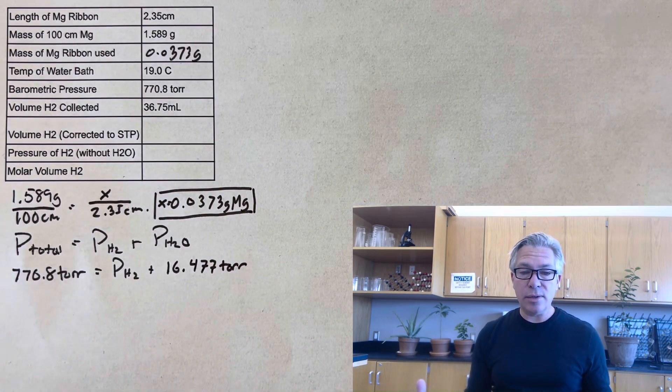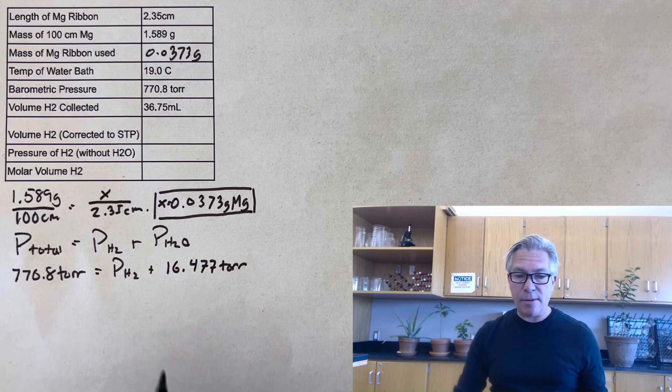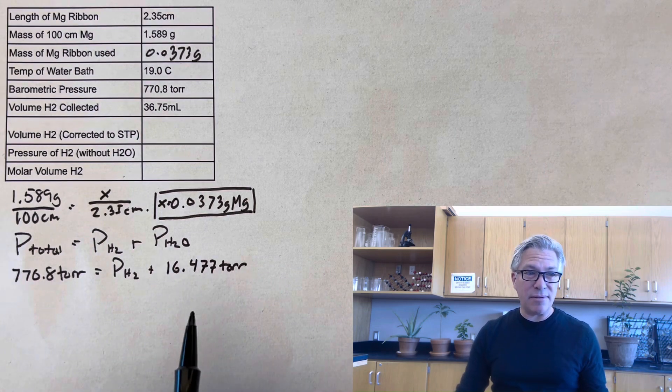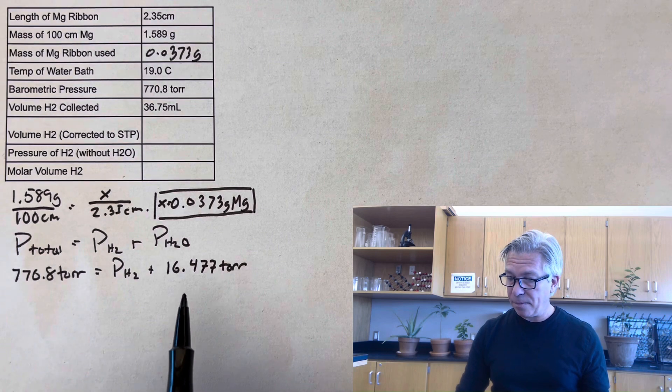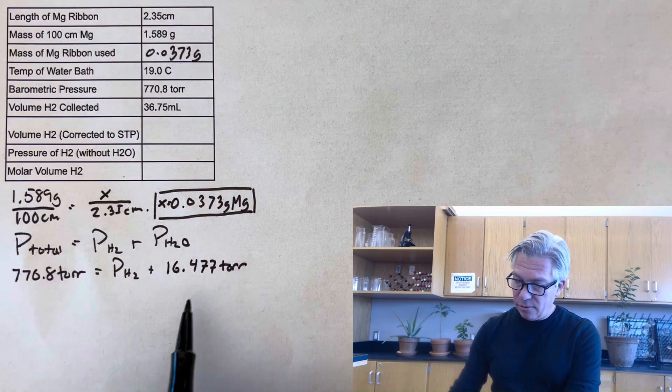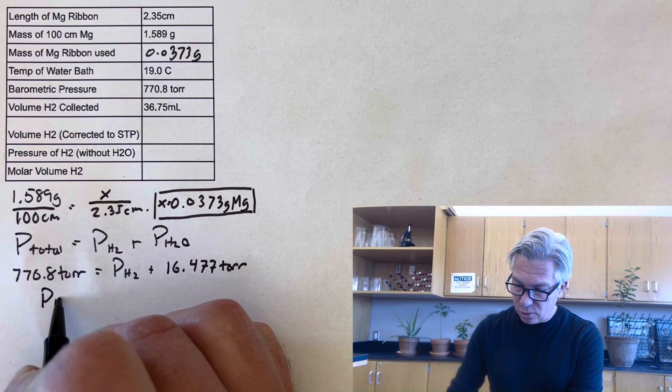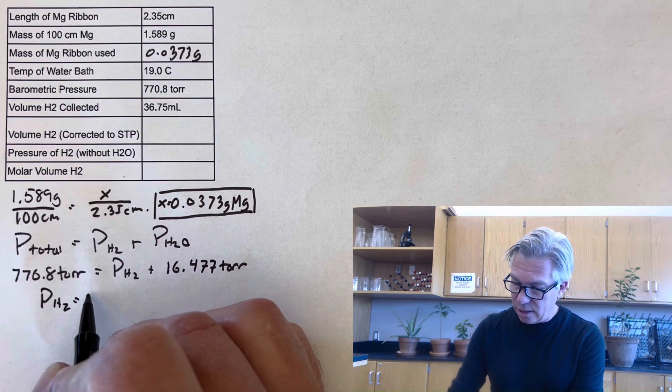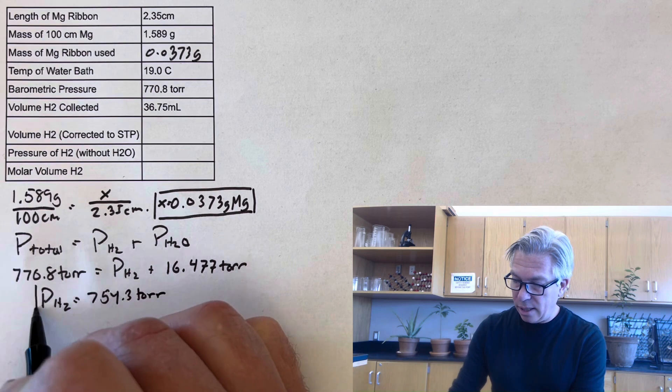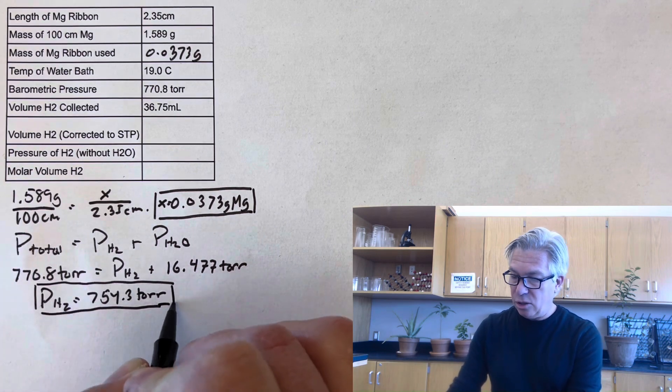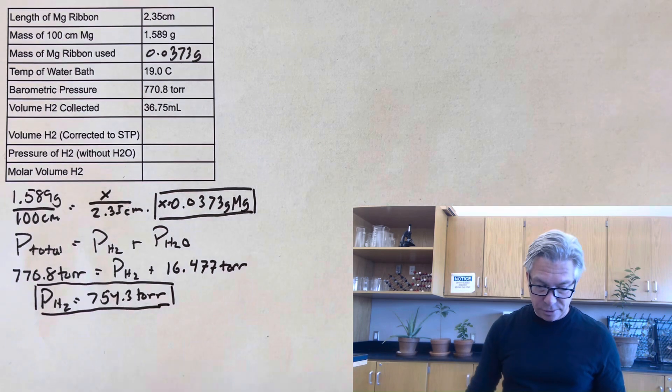As the water temperature would increase, more would evaporate. And so that vapor pressure would go up. So it is temperature specific. You'll have to just find a resource that will give you yours at your temperature. And if I subtract out the vapor pressure of water, the pressure of the actual hydrogen is actually 754.3 torr, not as much as the total where it matched the barometric pressure. So that's my correction factor. Okay, so pressure of the hydrogen. So let's put that in here, 754.3 torr.